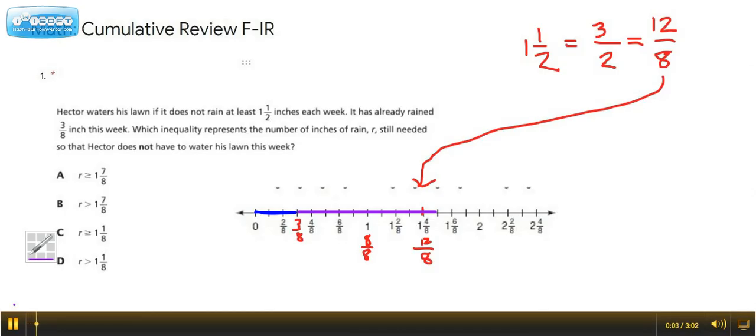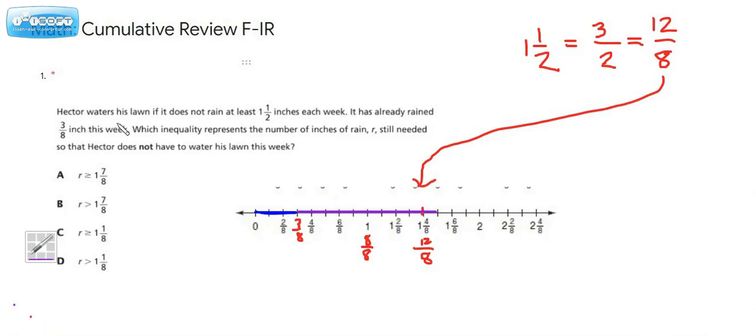Hey everybody, Ms. Dietrich here. We're taking a look at question number one. Hector waters his lawn if it does not rain at least one and a half inches each week. It has already rained three-eighths inch this week. Which inequality represents the number of inches of rain are still needed so that Hector does not have to water his lawn this week?